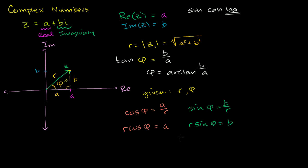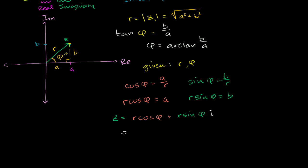So we can write the complex number z equal to its real part, r cosine of phi, plus the imaginary part times i, plus r sine of phi times i. Factoring out r, this is equal to r times (cosine of phi plus i sine of phi).